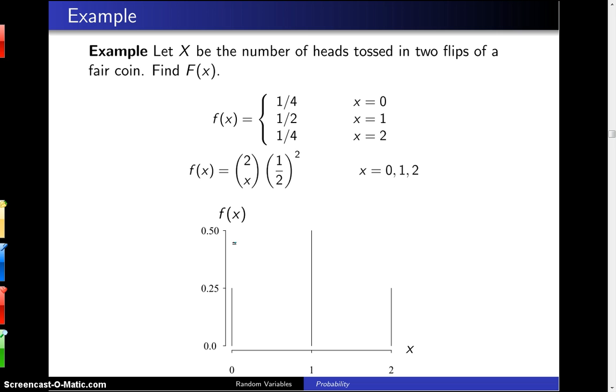Well, in this particular case, there are four equally likely outcomes. And those four equally likely outcomes are heads-heads, heads-tails, tails-heads, tails-tails for two flips of a fair coin.